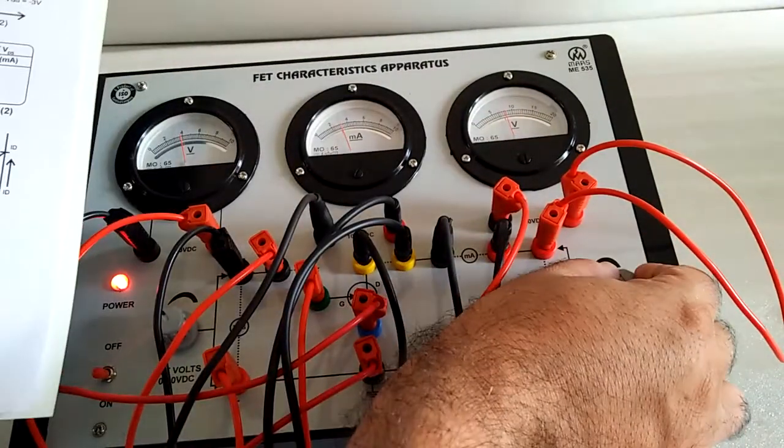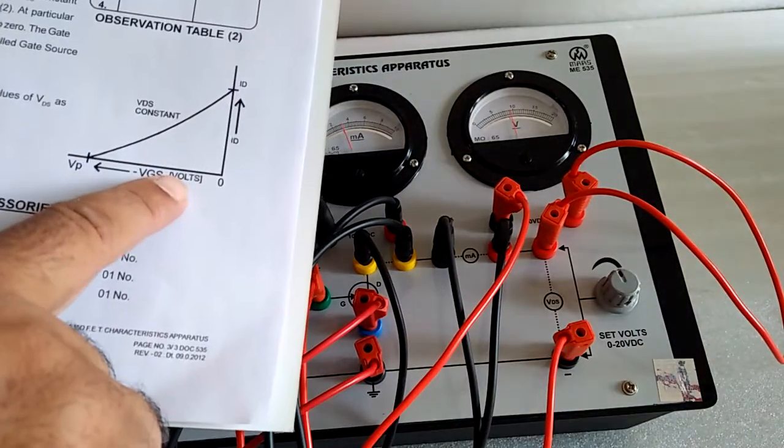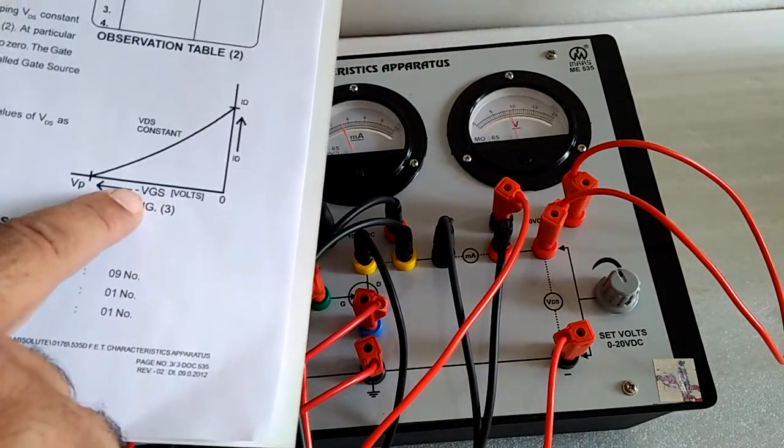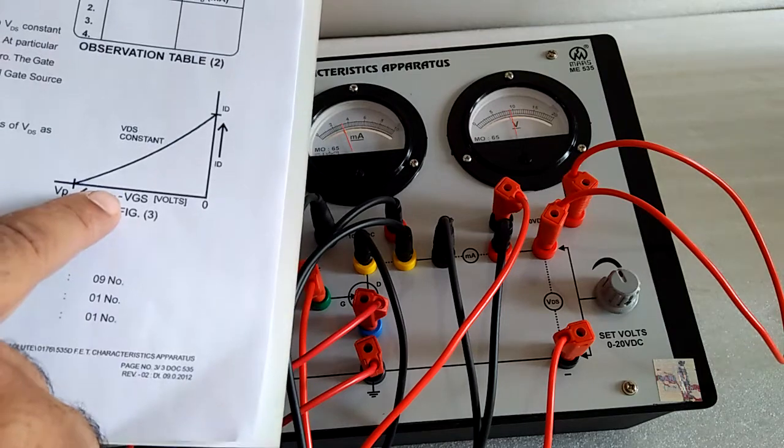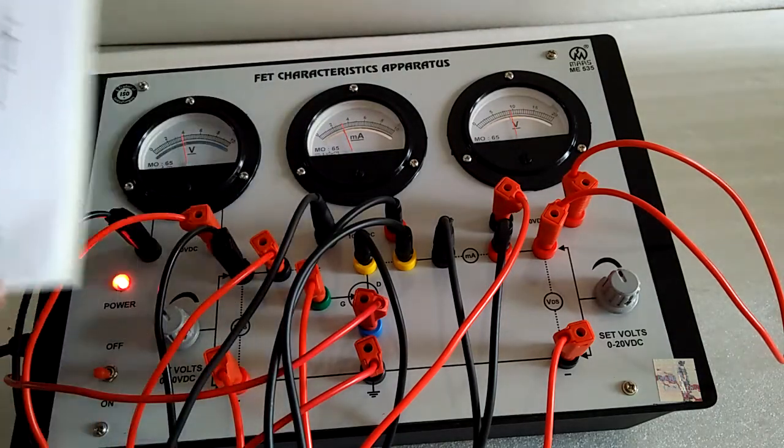Now increase the VGS. You can see in negative form, and ID.